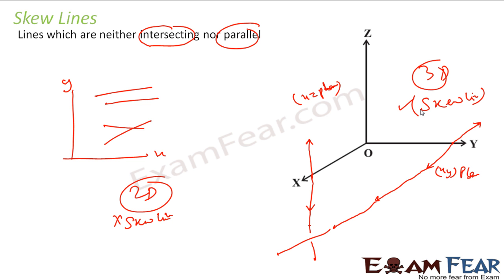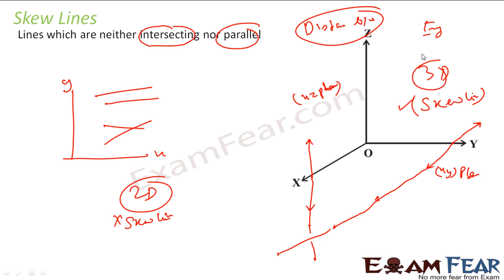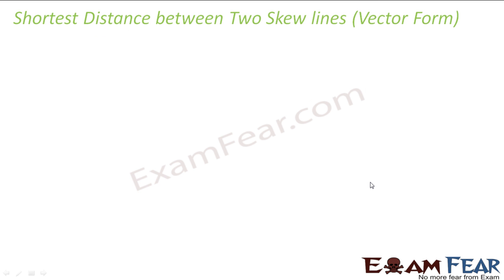In 3-dimensional, if there are two lines and they are not intersecting, it is very interesting to find the distance between them. Because in real life, we have everything in 3-dimensional — all the engineering work we do is in 3-dimensional. So we actually need to find the distance between skew lines.